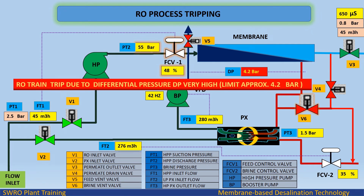RO train trip due to differential pressure DP very high, limit approximately 4.2 bar.